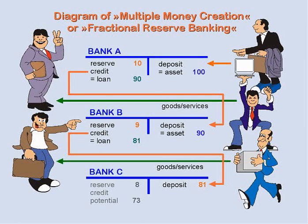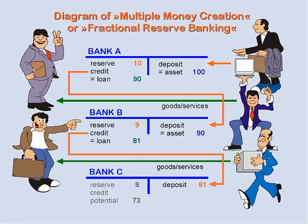It's a little different with current accounts, because the depositor can withdraw his money at any time he chooses. If the depositor at Bank A wants his money back before the borrower has repaid his debt to the bank, the bank would have to borrow the money itself at the interbank money market in order to meet the client's demand. In case the interbank money market cannot provide the credit, the bank would have to ask the lender of last resort — the central bank — and the bank would get the needed money there.